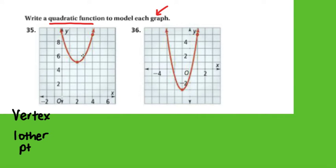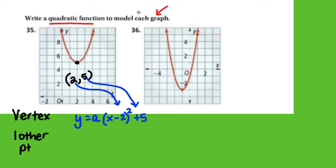So first I have my vertex, which is right here, which appears to be 2, 5. So I'm going to plug that into vertex form. So remember, vertex form is y equals a times x minus 2 squared plus 5. I plugged that vertex right in there. But now I've got to find the value of a.